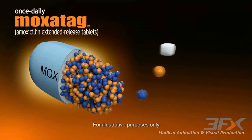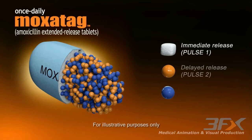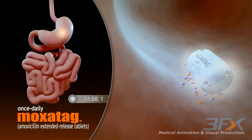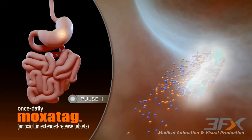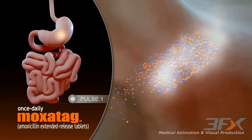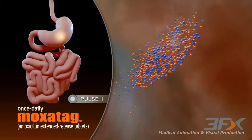Moxitag consists of three active components of amoxicillin: one immediate release and two delayed release components. Pulse 1, the immediate release component, releases a portion of the total amoxicillin dose in the stomach.